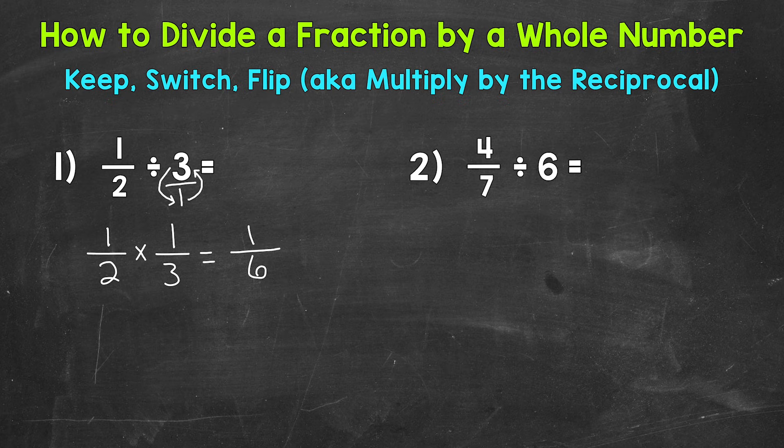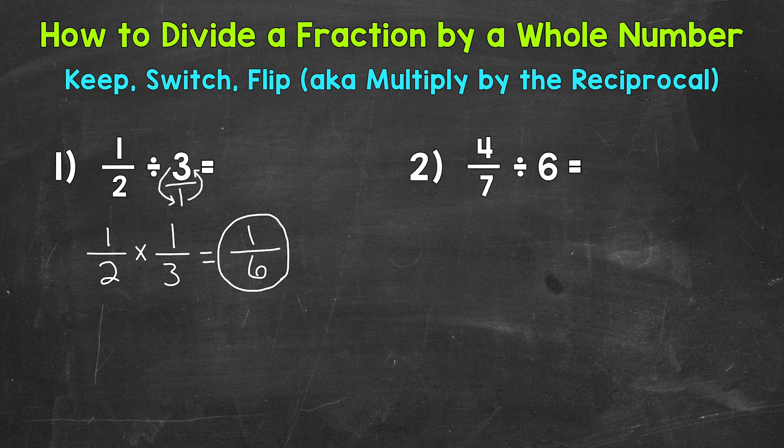Always check to see if you can simplify. One sixth is in simplest form, so we are done. One half divided by three equals one sixth.